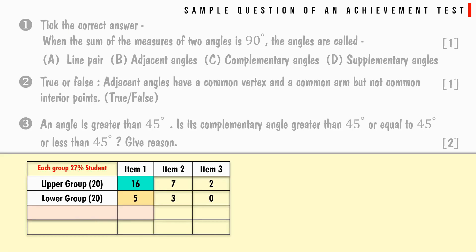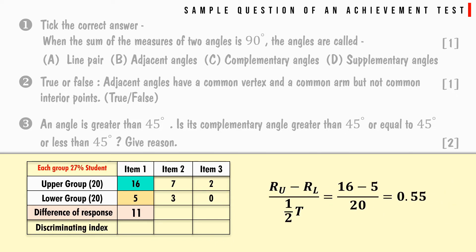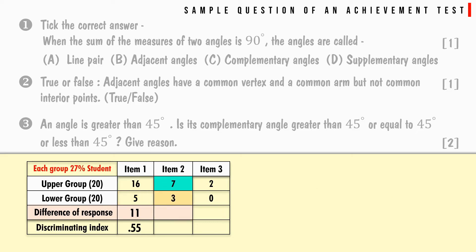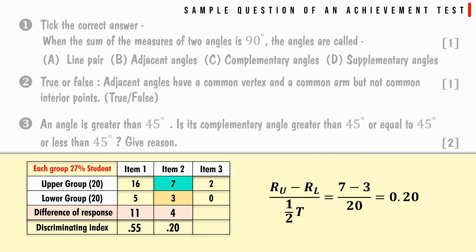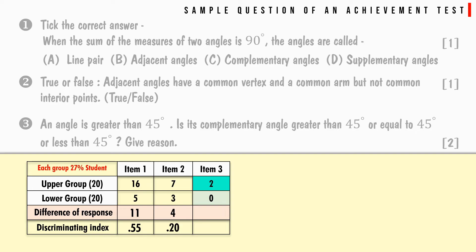Continuing with the previous example: the difference in responses for item number 1 is 11, giving a discrimination index of 0.55. For item number 2, the difference is 4 and the discrimination index is 0.20. For item number 3, the difference is 2 and the discrimination index is 0.10.